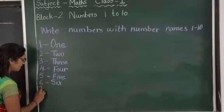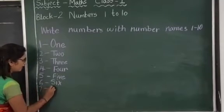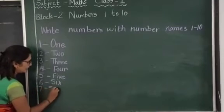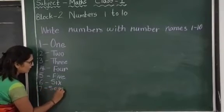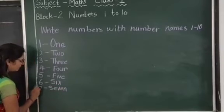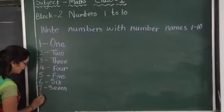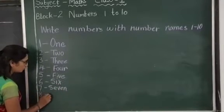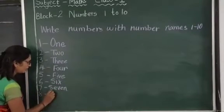After 6 comes 7 — S, E, V, E, N — seven. After 7 comes 8. We write 8 — E, I, G, H, T — eight.